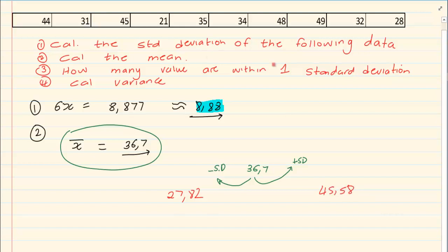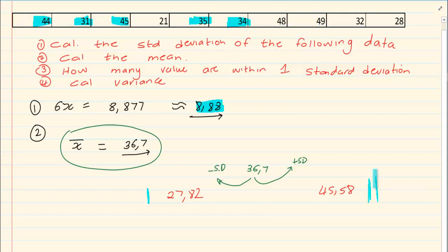Now, how many values fall between 27.82 and 45.58? Looking at our data: 44 falls within, 31 does, 45 does, 21 doesn't — it falls below. 35 falls within, 34 does, 48 doesn't — it falls over. 49 doesn't, 32 does, and 28 does. So seven values fall within one standard deviation.